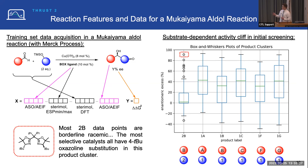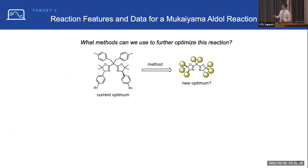For the other substrates, we were really pleased to see that one of our training set catalysts is the most selective for all of them. We reached 93% EE for product 1A, which is the product Merck was interested in — already beating the best they could do through our algorithmic subset selection. But we really want to push this further and see if we can do better. We're at a current optimum and want to identify a new one, and we have two methods available to do that.